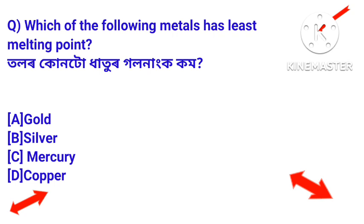Question: Which of the following metals has the least melting point? Answer: Mercury — mercury is the metal with the lowest melting point.